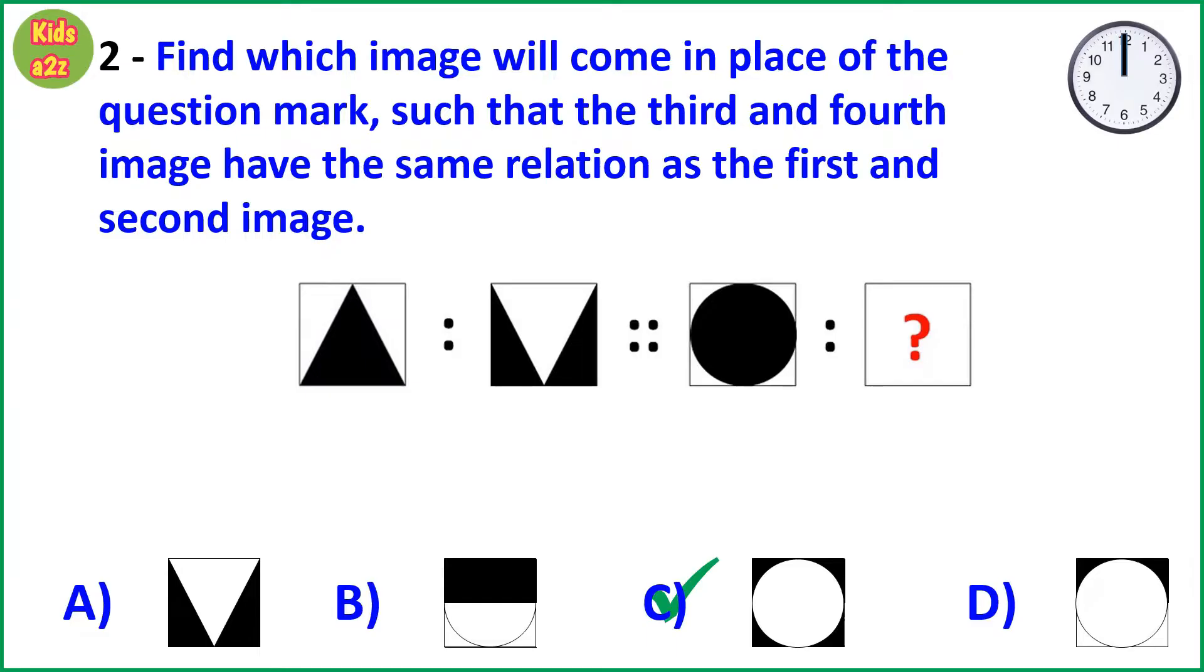Answer is Option C. Because the first image gets flipped to form the 2nd image and colors of the black and white portions are interchanged. Similarly, by following this logic, we will get the image shown in Option C.